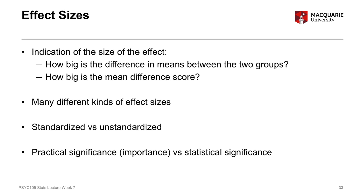Effect sizes are very important to interpret — more important than statistical significance — because they give us a sense of how important a particular effect is. For example, how big is a decrease in anxiety following a CBT intervention? In applied psychology, knowing how big an effect is helps us determine whether an intervention is worthwhile, whether one therapy is better than another, and whether we're having a meaningful effect on people's lives.